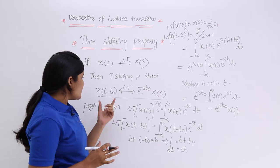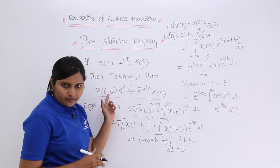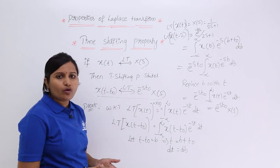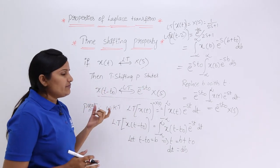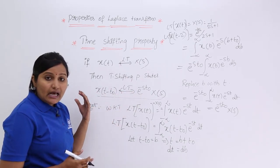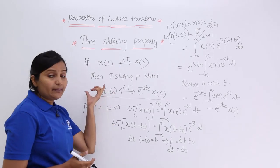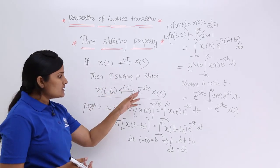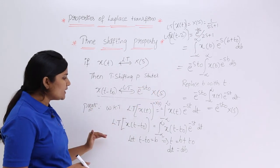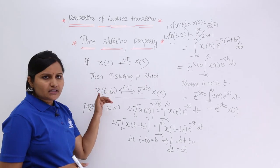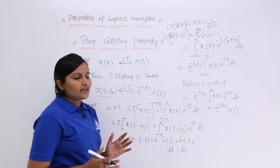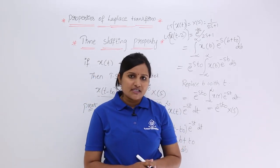For a positive shift — that is, X of T plus T naught — the Laplace transform becomes E power plus S T naught into X of S. That is the only difference. If you substitute T plus T naught in the same derivation, you arrive at the same result with a positive exponent. This completes the discussion of the time shifting property in Laplace transforms.